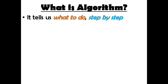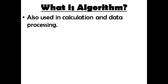An algorithm tells us the output and how to get that output step by step, helping us solve a problem. In computing, the word 'problem' is used for a routine or general task — not necessarily something unsolvable, but any routine work. Algorithms are also used in calculations and data processing.